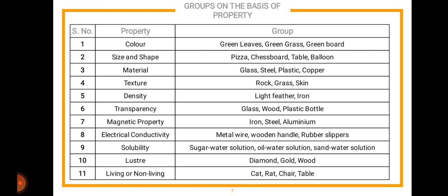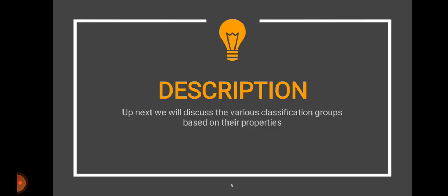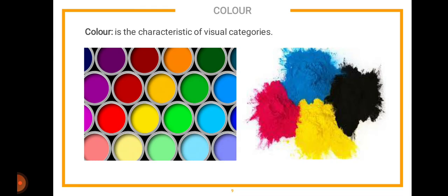The first classification property is color. Color is a characteristic of visual categories. When you see the school bus, you know it's yellow. When you see trees, you know they are green. This is how we classify by color — you are able to see and tell.